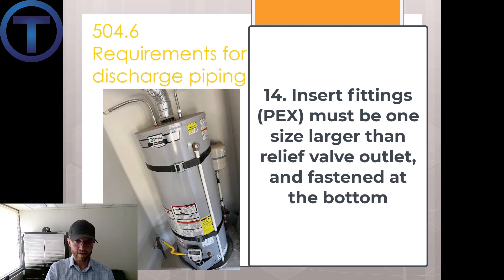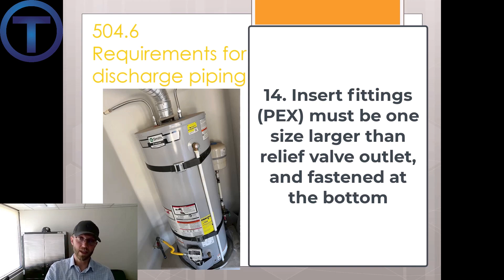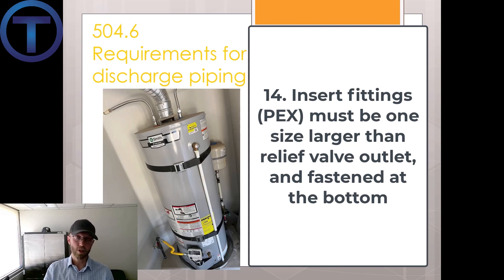The outlet end of PEX tubing used as the discharge shall be fastened in place — put a two-hole strap or something like that on it to hold it in place. There's a lot to remember when it comes to discharge piping, but hopefully that helps you know what's acceptable and what's not.